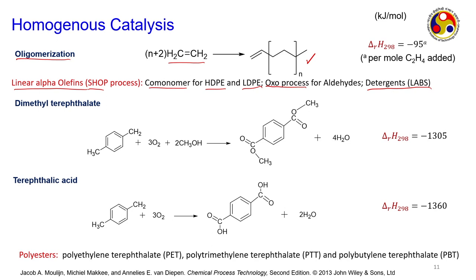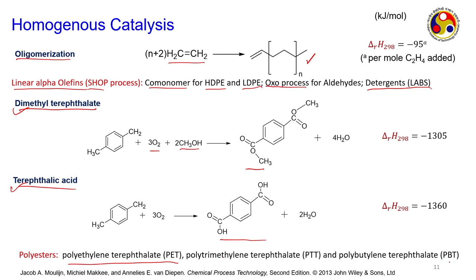Two other important components are precursors for polymer production: terephthalic acid and dimethyl terephthalate (DMT). These are the monomers for the manufacture of polyethylene terephthalate (PET - used for bottles, cold drink bottles, feeding bottles), poly trimethylene terephthalate (PTT), and poly butylene terephthalate (PBT). This should be remembered.